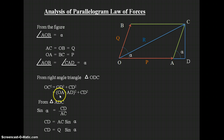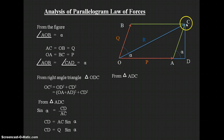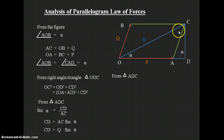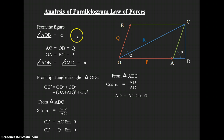We know OA = P. To find AD, consider right-angle triangle ADC and apply the cosine rule: cos(alpha) = adjacent / hypotenuse = AD / AC. Therefore, AD = AC · cos(alpha) = Q · cos(alpha). So AD = Q · cos(alpha).